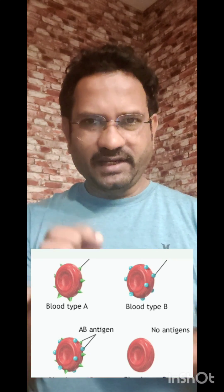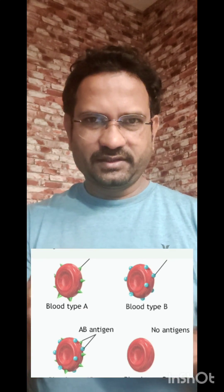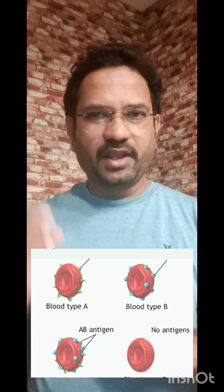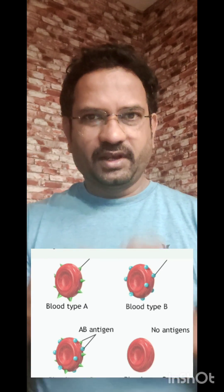Hello everyone, welcome to the video on the concept of ABO blood grouping. First understand this thing: human red blood cells contain antigens — antigen A, antigen B, or antigen AB. Based on the presence of these antigens, their blood type is grouped.